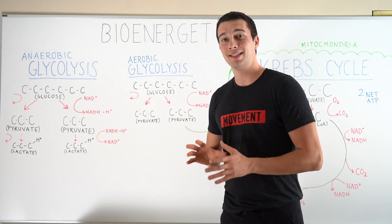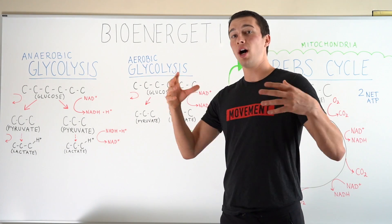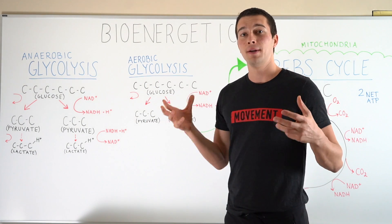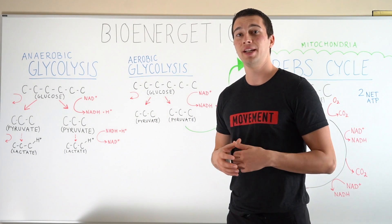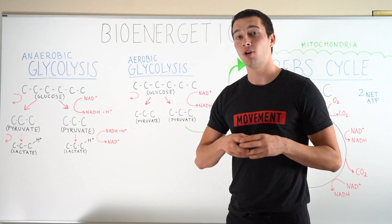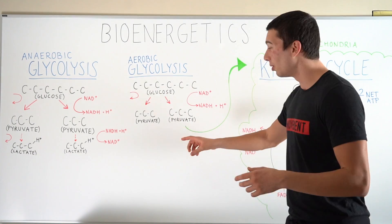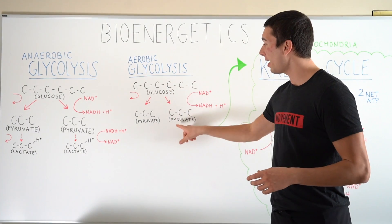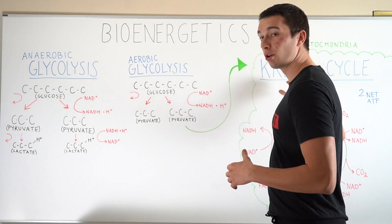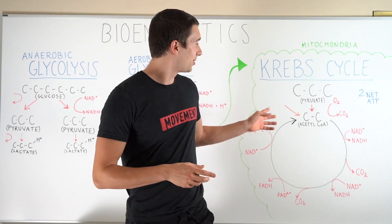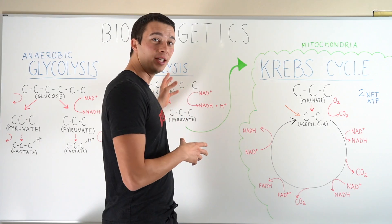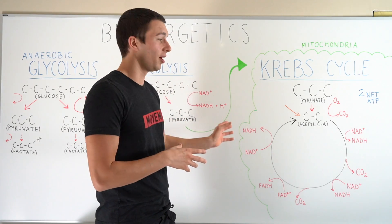In the case of aerobic glycolysis, there's oxygen present in the cell — there's adequate blood oxygenation. That oxygen is being carried into the cell, into the mitochondria, and the mitochondria has room. So what's going to happen is that pyruvate is actually going to be broken down to acetyl-CoA and enter the Krebs cycle. That is what happens after aerobic glycolysis.